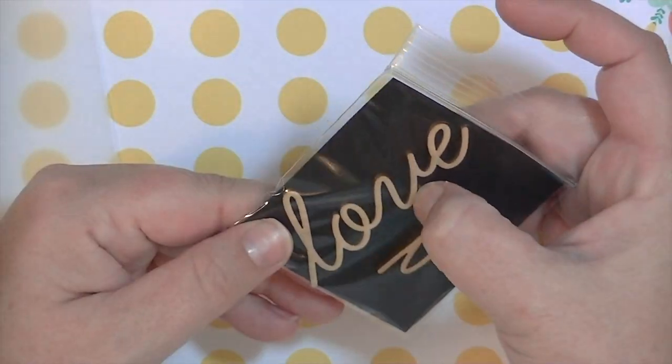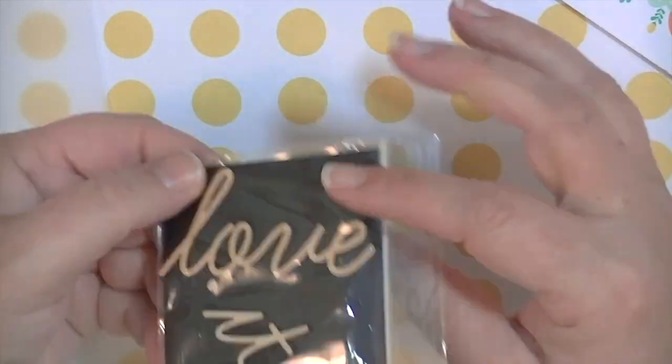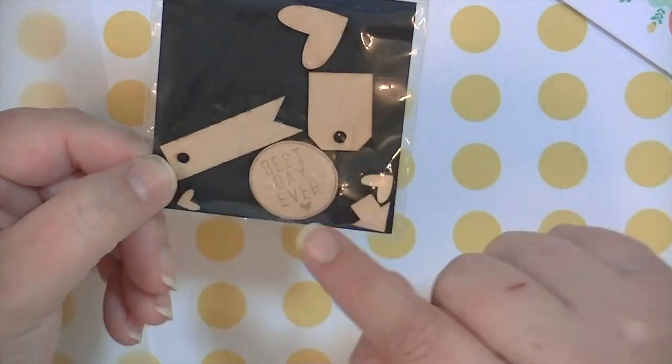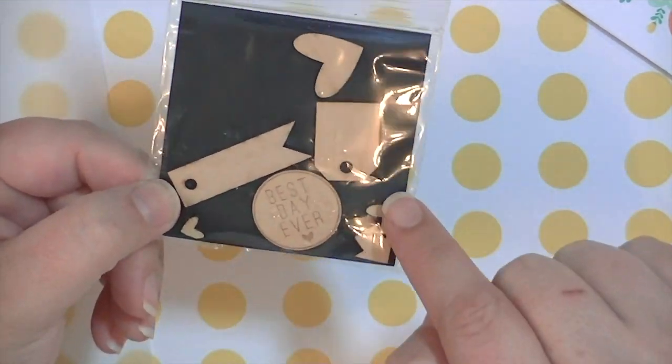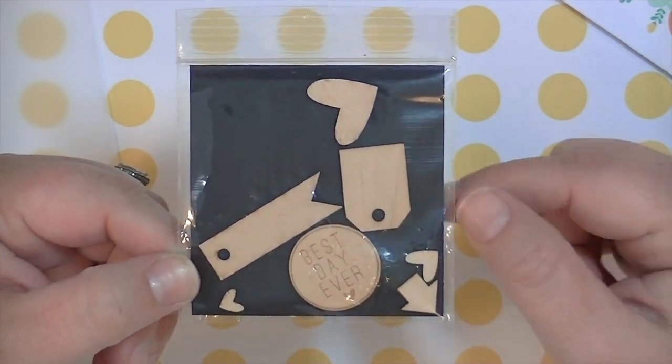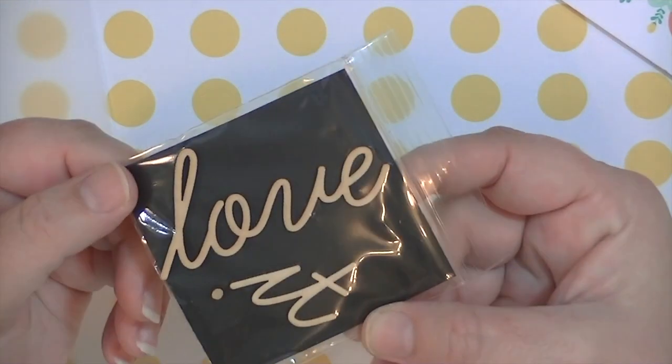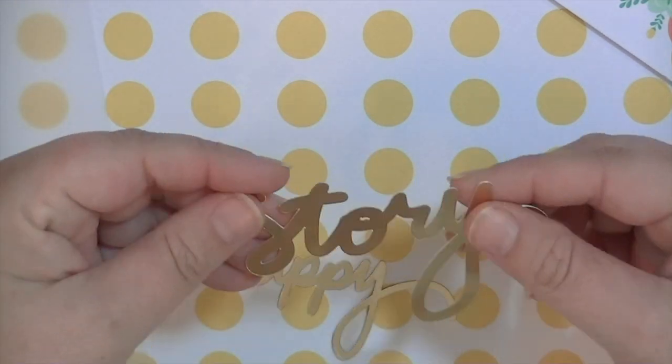Then there's another little pack of wood veneer and this one says love it. On the other side there's a selection of hearts and arrows and some tags. This little circle says best day ever. What I didn't notice when I was showing it in this package is that there's some detail on those wood veneers that you'll see in my process video.